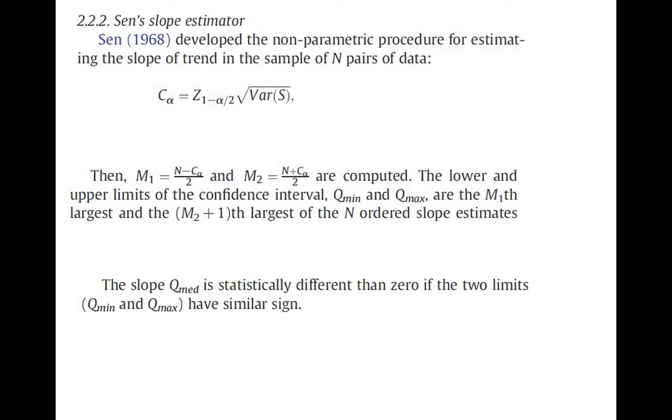Variance S is also the same as that we calculated in the Mann-Kendall test. Then we calculate M1 and M2. These are upper and lower limits of confidence interval.